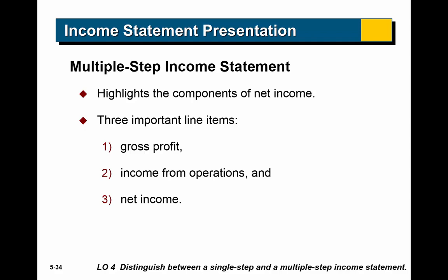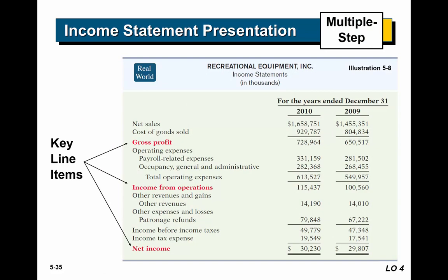The multi-step income statement starts with gross profit — the difference between revenue and cost of goods sold. Then there's income from operations, which separates expenses into two groups: operating expenses (day-to-day costs of running the business) and non-operating revenues and expenses (exceptional or unusual items). Finally, there's net income — which you already knew from the single-step statement. For example: net sales minus cost of goods sold equals gross profit; minus operating expenses gives income from operations; minus other revenues and expenses gives net income.